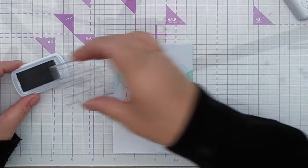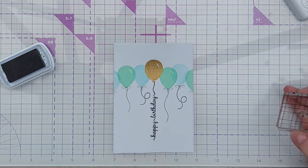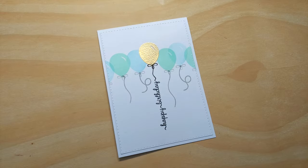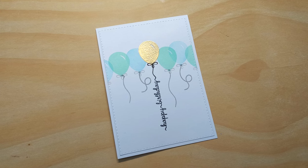The StazOn black ink is great because it does stay on. It will stamp over things like gold embossing and stay on them permanently, so that worked well.